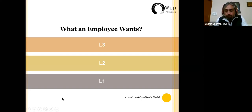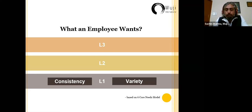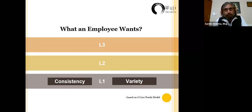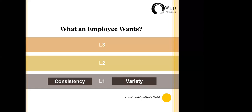On Level One, we have two core needs every person wants: consistency and variety. Consistency in an organization means that when I turn up to work, I want to make sure my company still exists. If my company is struggling and I don't know whether I'll have my job today or tomorrow, that environment will keep me on my toes. If my base is shaken — if my job role is not defined properly, or my manager keeps changing direction — I cannot concentrate on my work. You cannot expect performance when someone's foundation is unstable.